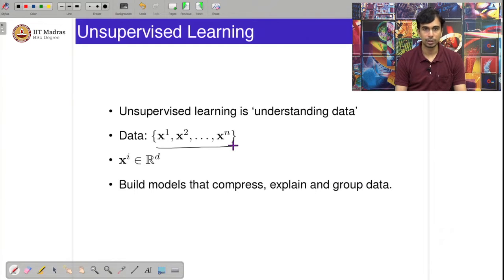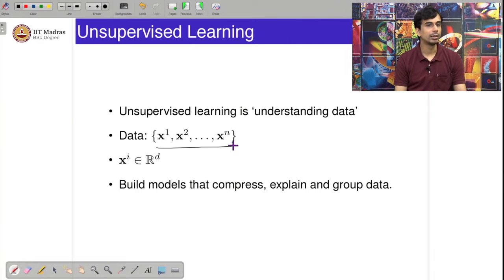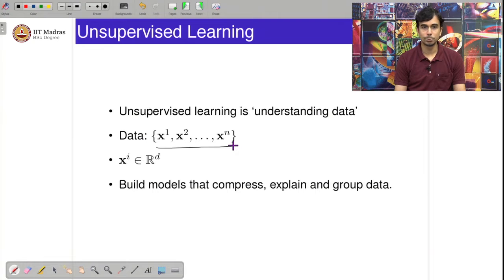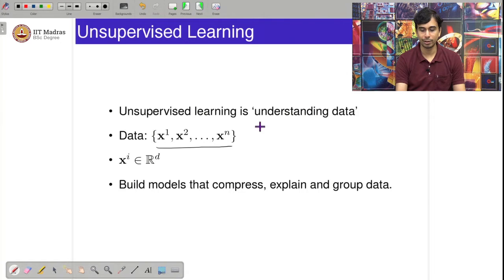Note that in contrast to supervised learning which always had 2 pairs of (xi, yi), here you have just xi, which are simply a collection of d-dimensional vectors. The goal of unsupervised learning is to build models that compress, explain, and group data — which is what I am broadly grouping as understanding.